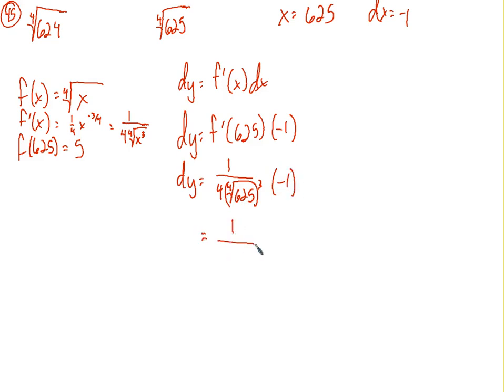And 1 over 4 times... Well, the 4th root of 625 is 5. To the 3rd. That's 1 over 4 times 125. Times negative 1. That's 1 over 500 times negative 1. So, final result. Negative 1 over 500.